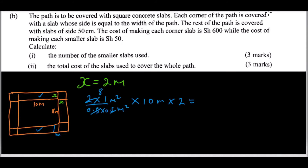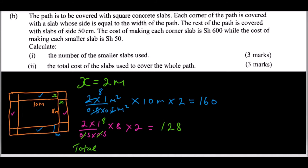For the two short sides: the strip is 2 meters wide by 8 meters long. Dividing the strip area by the small slab area (0.5 by 0.5) and multiplying by 2 for both sides gives 128 slabs. So the total number of small slabs is 160 plus 128, which equals 288 slabs.